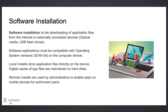Software installation is the downloading of application files from the internet or externally connected devices. Some common external devices would be optical media or USB flash drives. Software applications must be compatible with the operating system version that runs on the computer.